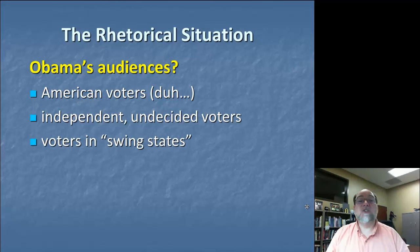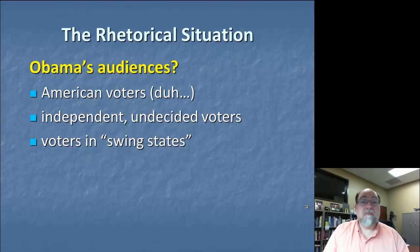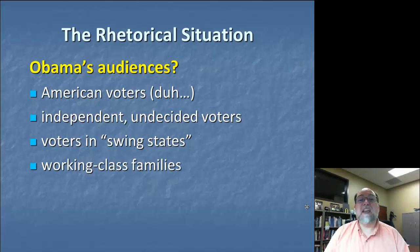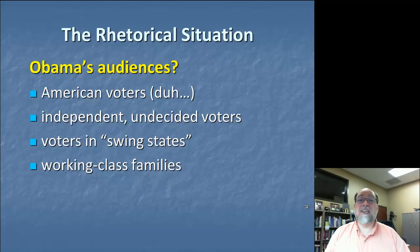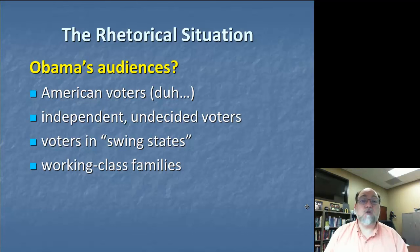This is especially going to be true in certain swing states — states that aren't reliably Republican or Democratic. In 2012, there are a number of states like this, including Florida, Iowa, Michigan, Ohio, and North Carolina. Targeting voters in these kinds of states is going to be particularly important. And certainly, given the centrality of the economy and jobs in this situation, targeting working class families is essential to Obama's rhetorical situation — the folks hit the hardest by the economic downturn, especially those that have lost jobs or are in fear of losing them. A lot of these folks, incidentally, happen to be independent, undecided voters in some of these industrial swing states, especially Ohio. So it's an absolutely crucial audience for Obama to reach.